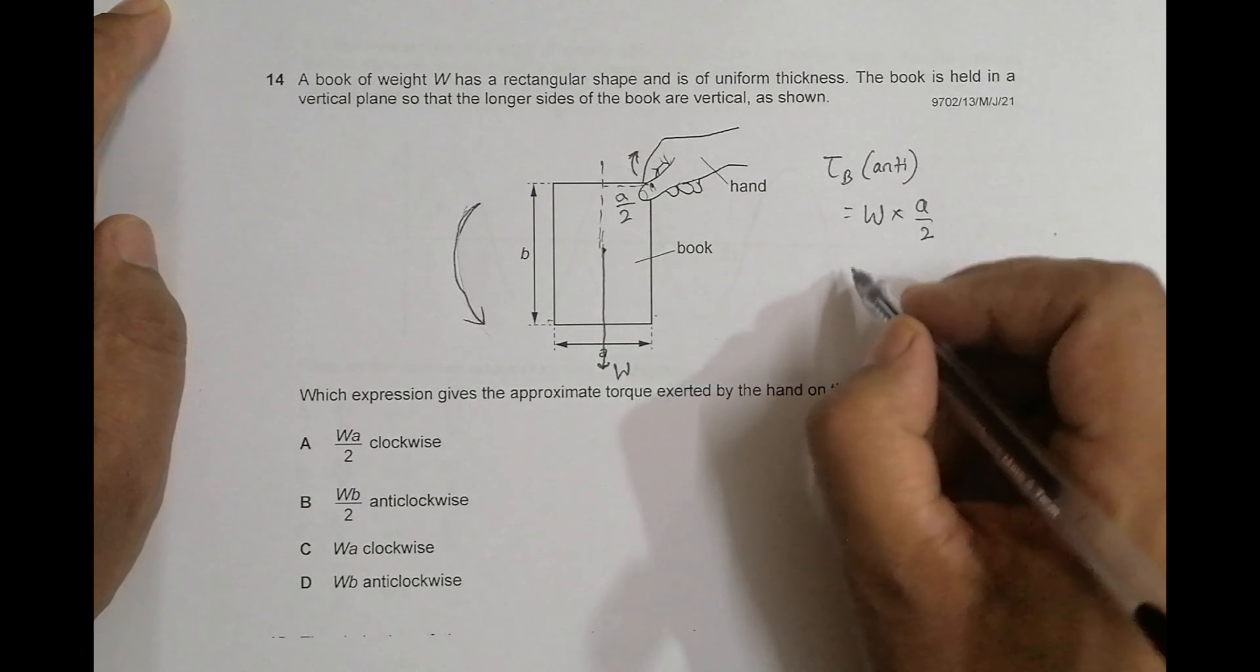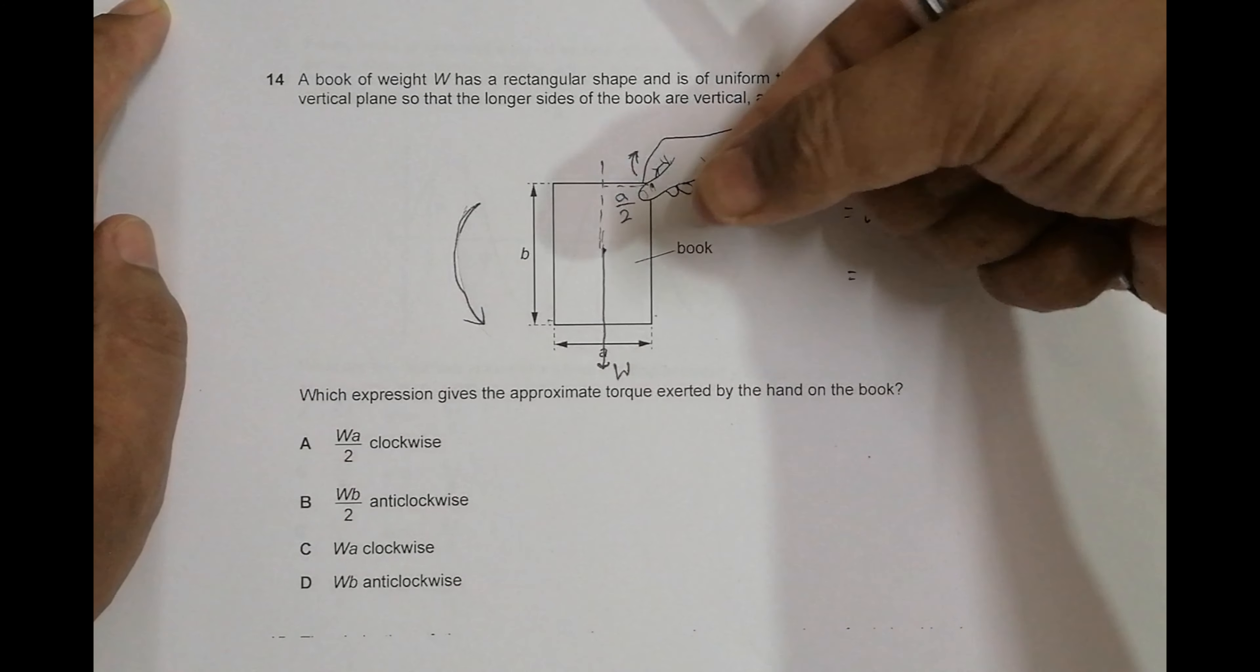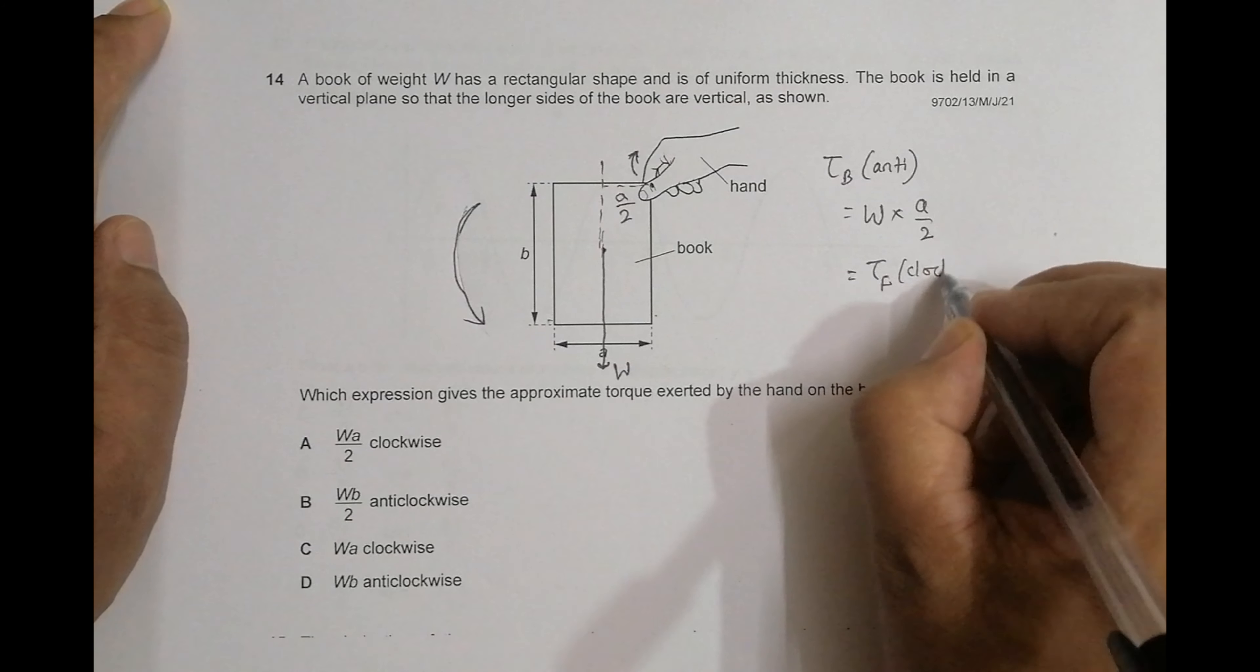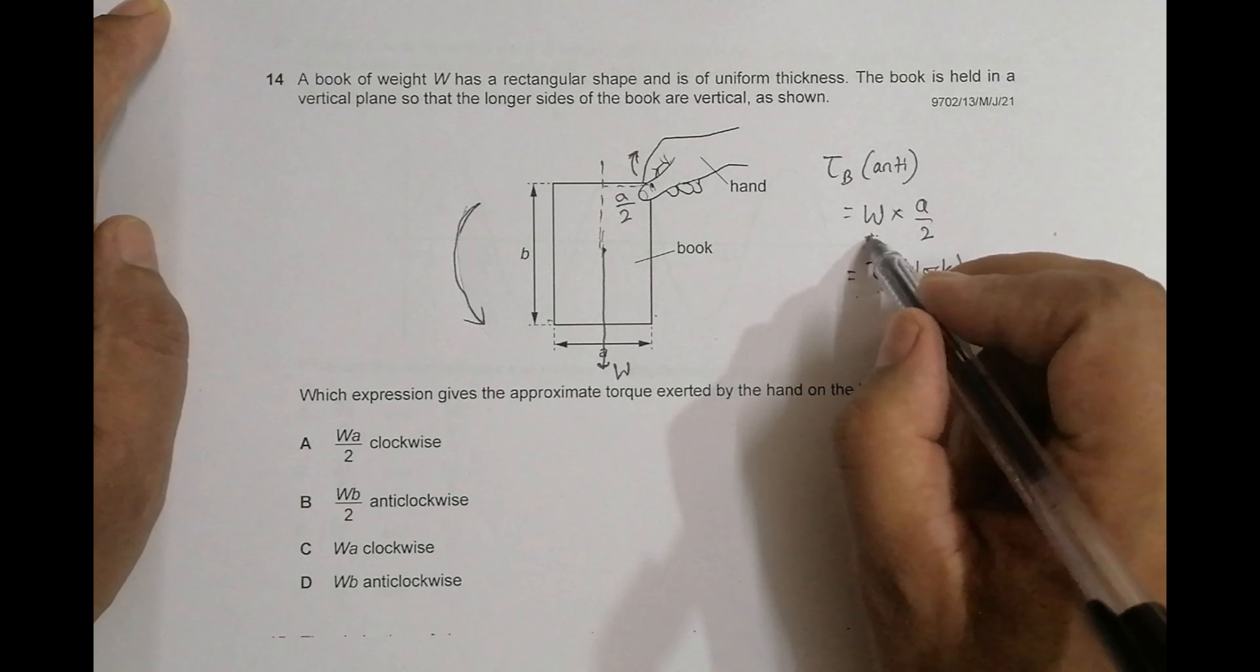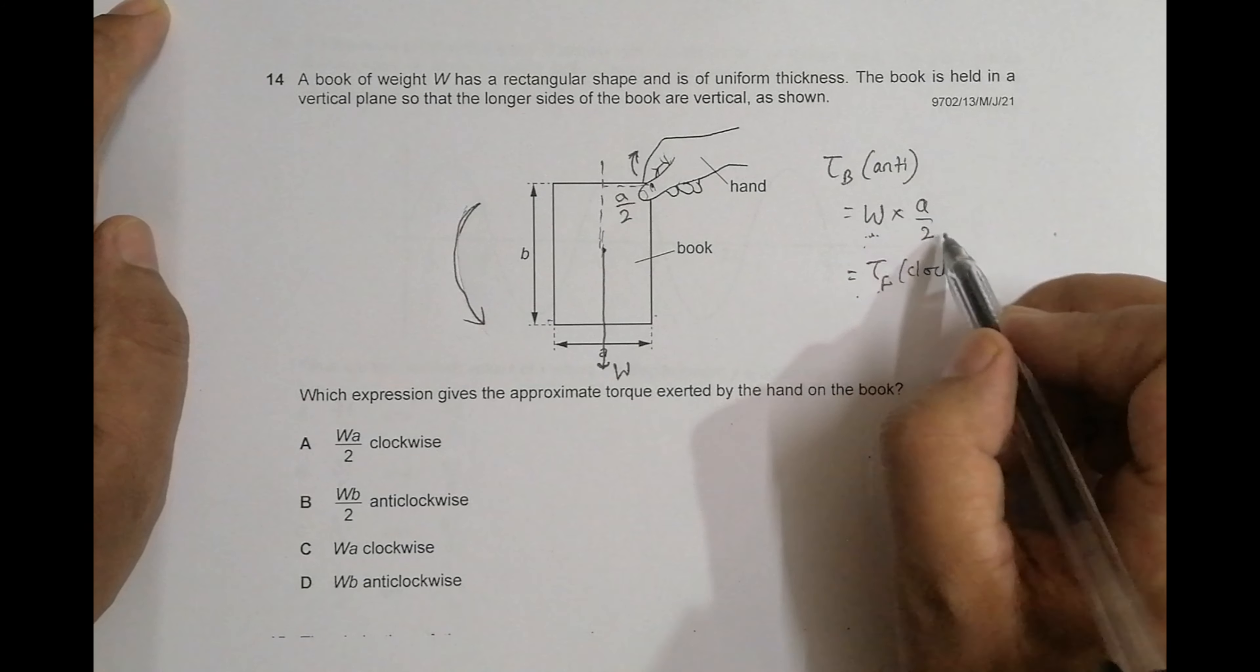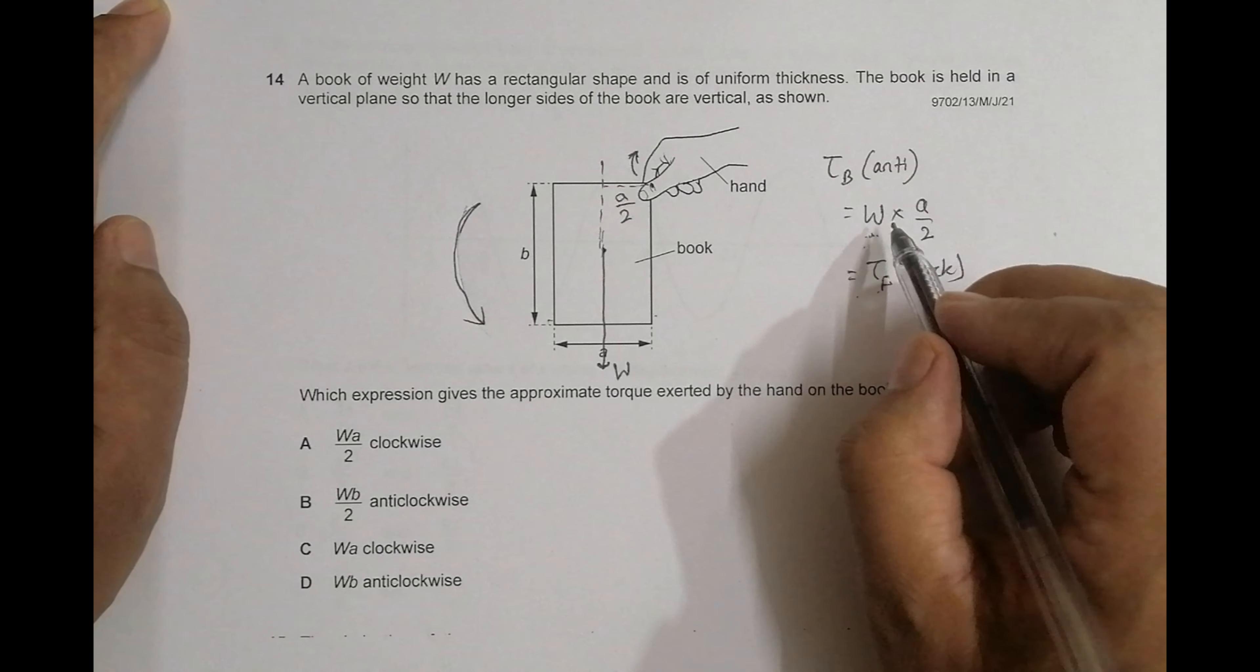Now to prevent it, the thumb and the whole hand, the combination of thumb and index finger, has to exert a force in such a way that the torque produced by the hand is in clockwise direction and it is equal and opposite to this. The magnitude of torque is W a by 2 and it should be clockwise.